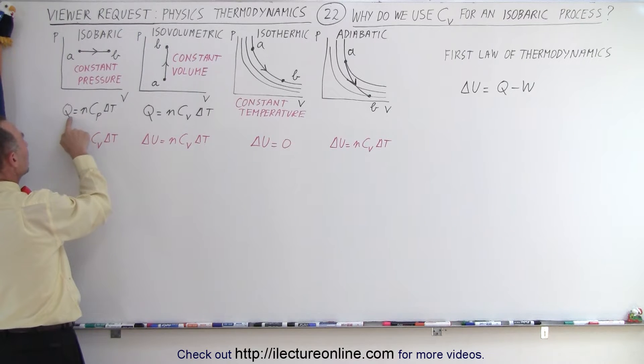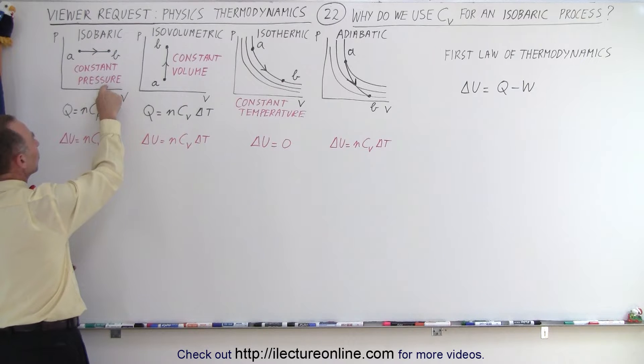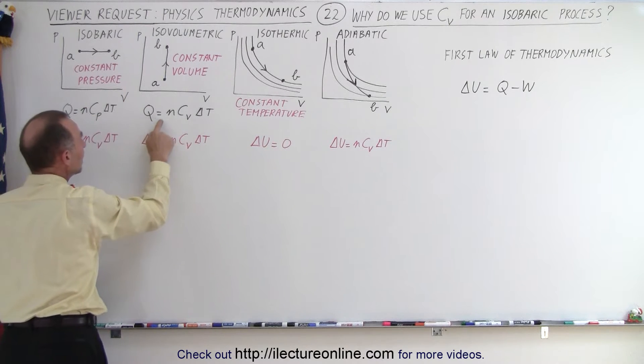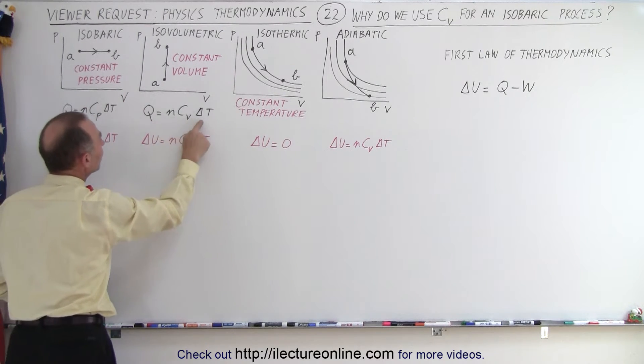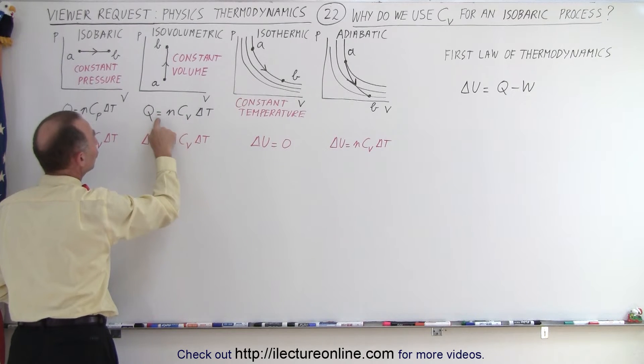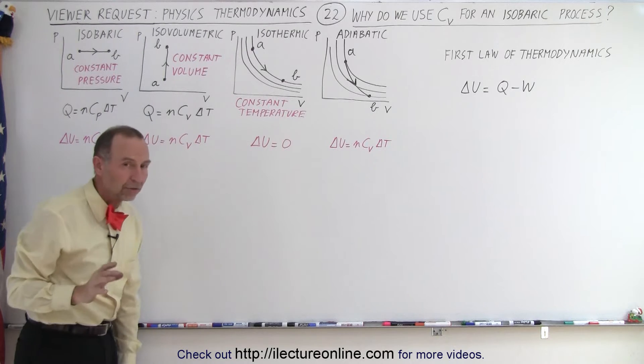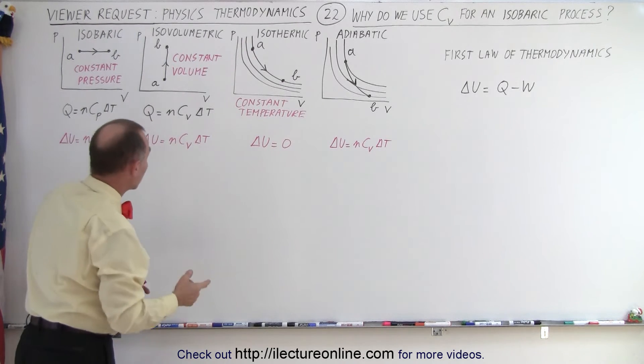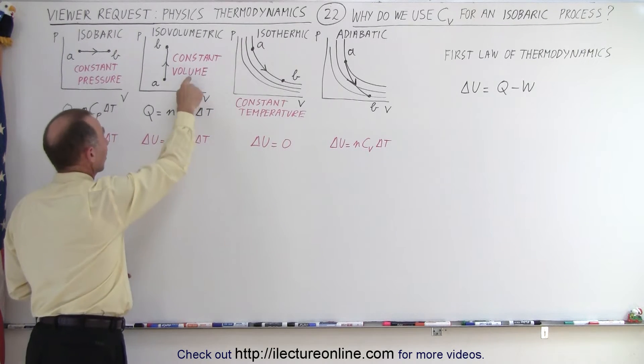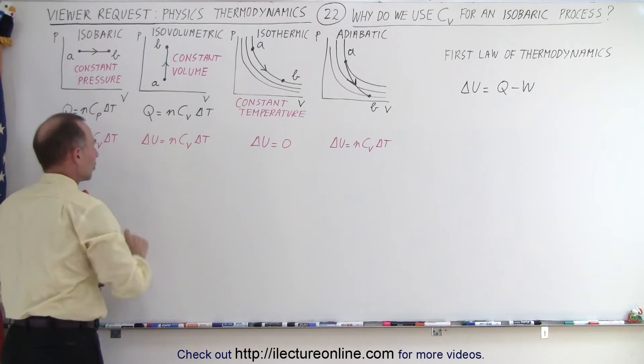We have Q equals NC sub P delta T, when we're dealing with a constant pressure process, isobaric, and Q equals NC sub V delta T, when we're trying to calculate Q for an isovolumetric process, where the volume remains constant. And so it seems to be clear we use C sub V for constant volume, and C sub P for constant pressure.